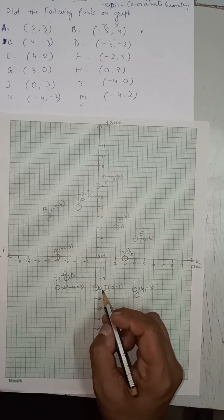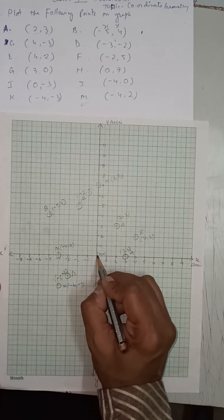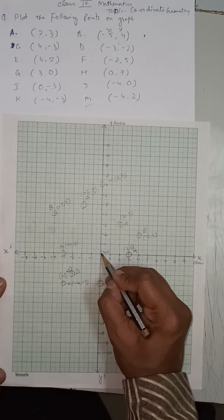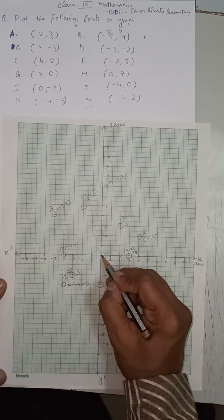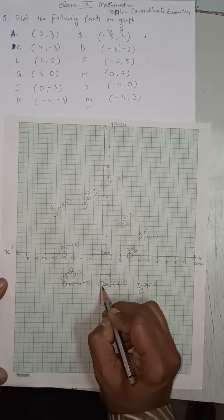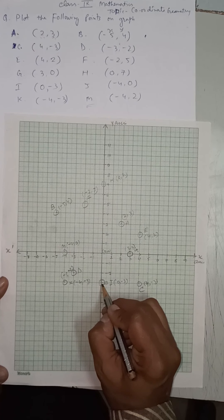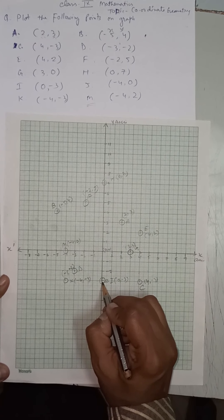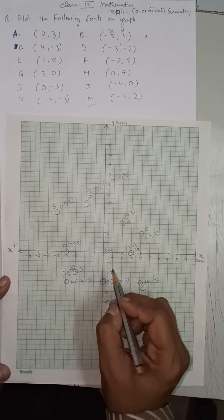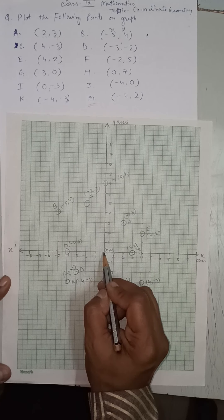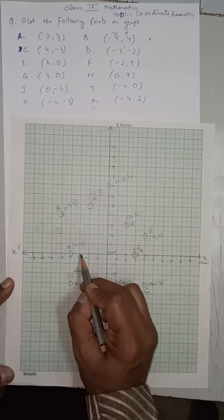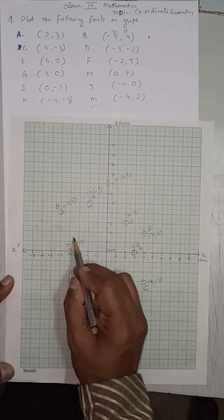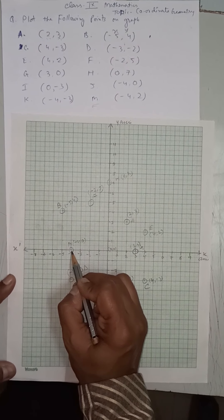Point I is (0, −3). X is 0, so we stay at the origin. Y is negative, so we go downward: minus 1, minus 2, minus 3. That is point I at (0, −3). Point J is (−4, 0). X is negative: minus 1, minus 2, minus 3, minus 4. Y is 0, so we do not move up or down. That is point J at (−4, 0) on the x-axis.